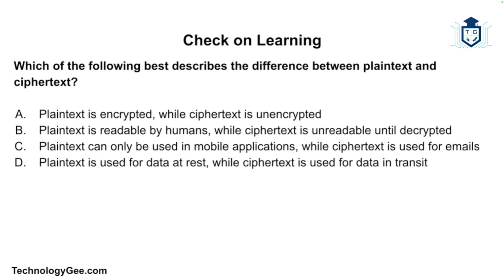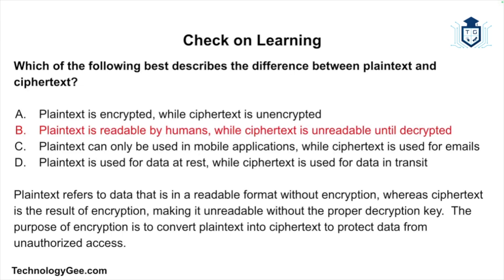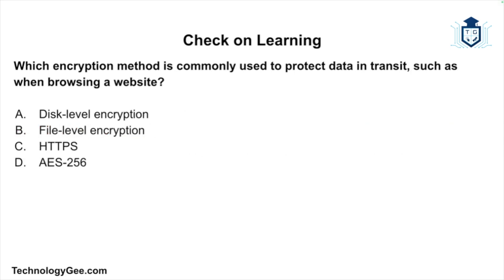Now let's do some check on learning. Question one: which of the following best describes the difference between plain text and ciphertext? The correct answer is: plain text is readable by humans while ciphertext is unreadable until decrypted. Plain text refers to data in a readable format without encryption, whereas ciphertext is the result of encryption, making it unreadable without the proper decryption key. The purpose of encryption is to convert plain text into ciphertext to protect data from unauthorized access.